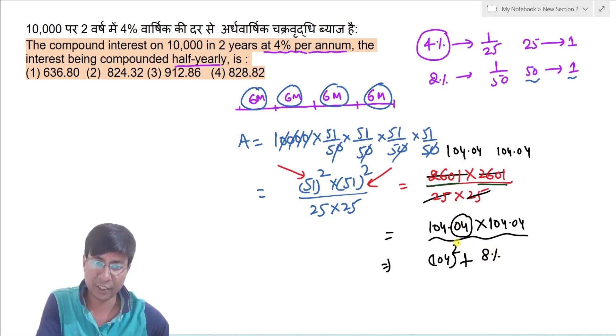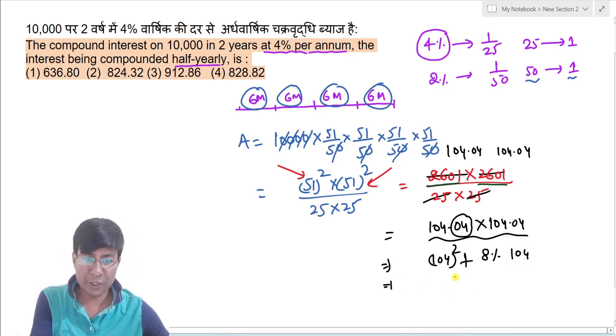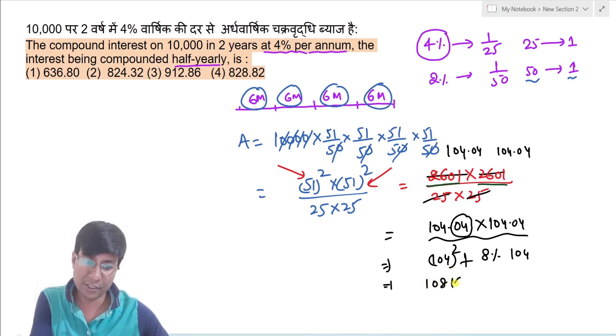Toh 04 ka double kitna hoga, 8%, aur 8% kiska nikaloge, jo integral value hai. Toh 8% ho jayega 104. Toh agar 104 ka square karoge, toh ye value hota hai 108 aur 16.